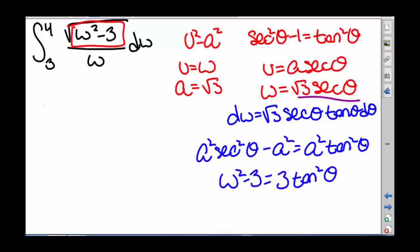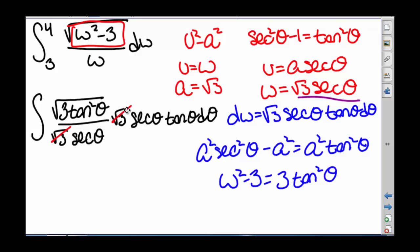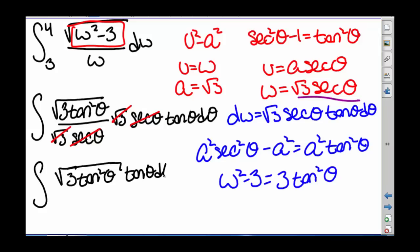So our new integral is going to be the square root of 3 tangent squared theta divided by our new w, which is square root of 3 times secant of theta, d theta. Our square root of 3's cancel out and our secant of theta's cancel out. So we're going to be left with the integral of tangent squared theta d theta. Let's figure out the bounds.